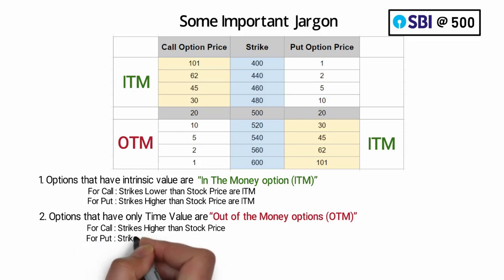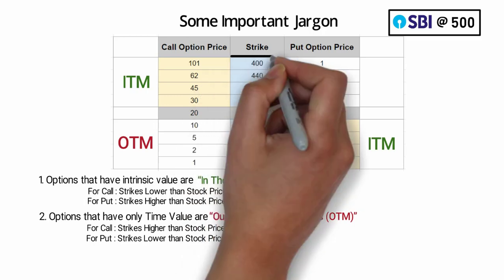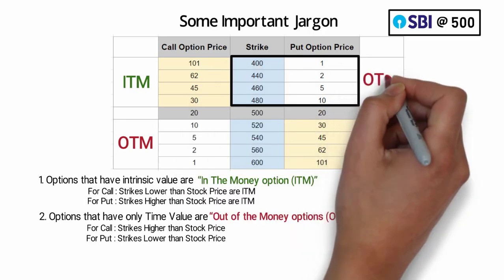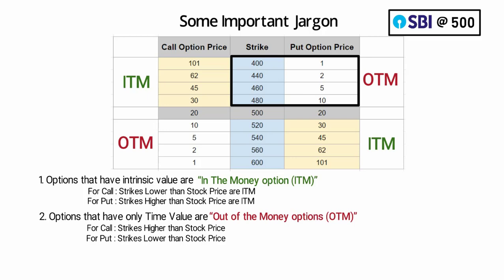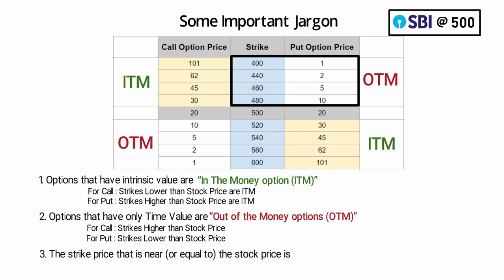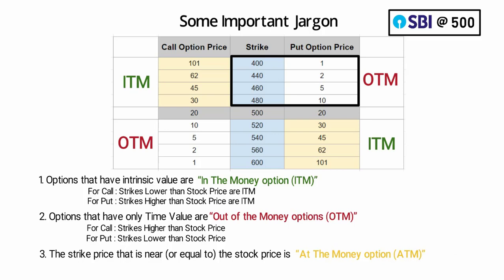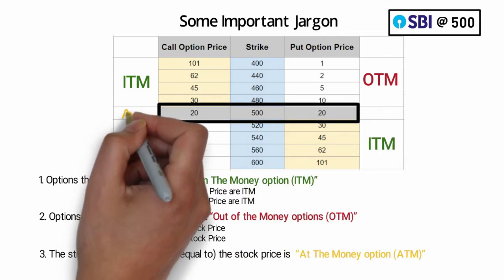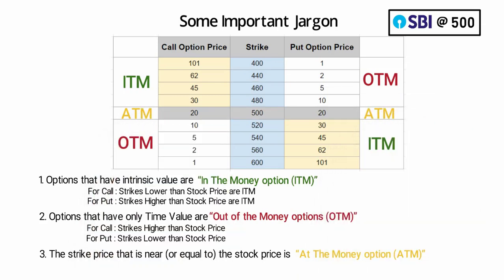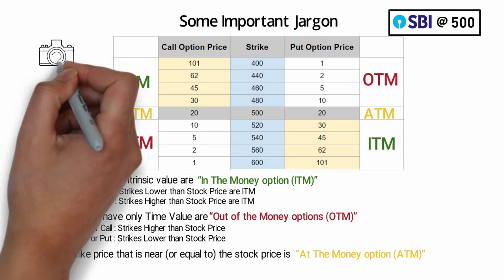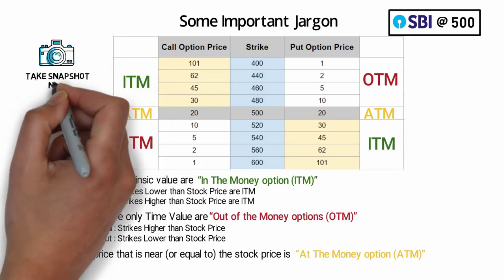For put options, OTMs are strikes lower than the current stock price. For example, if SBI is trading at 500, the 480, 460, or 440 are the OTM options — they are worth nothing if SBI expires at 500. Lastly, number three: the strike price that is near or equal to the stock price is called the at-the-money option, or ATM. For example, if SBI is trading at 500, the 500 strike price is ATM for both call and put. The ITM, OTM, and ATM are also referred to as the moneyness of the option.